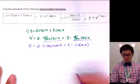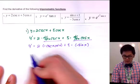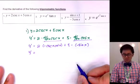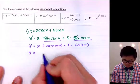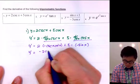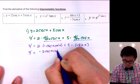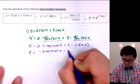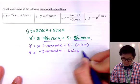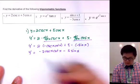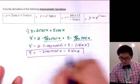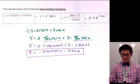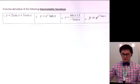Now that we have found the derivative, all we have to do is simplify our answer. We'll end up with negative 2 cosecant x cotangent x, and then positive and negative becomes negative 5 sine x. So this is our answer for the first derivative.